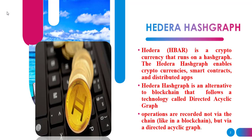In blockchain technology, the events are formed in the form of a chain — that makes a blockchain. Whereas in Hedera Hashgraph, the events are formed in the form of a directed acyclic graph. The operations in the Hedera Hashgraph are recorded in the form of directed acyclic graph, and it works on the principle of gossip about gossip. That's a basic difference between blockchain technology and Hedera Hashgraph.